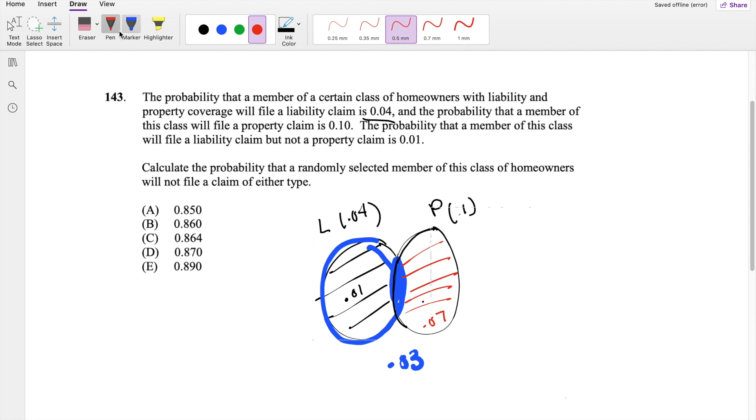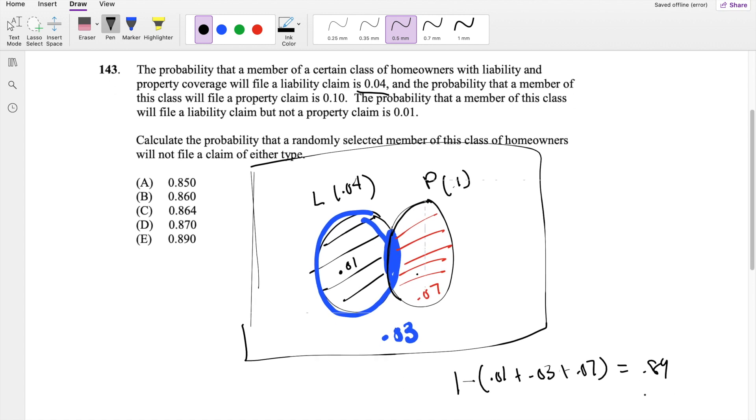And then they ask you, what is the probability that they file neither of these claims? So that's basically, what is the probability of the outside? So that's going to be equal to 1 minus everything inside, right? So everything: the 0.01, the 0.03, and the 0.07. So then this is equal to 0.89, which is our answer E.